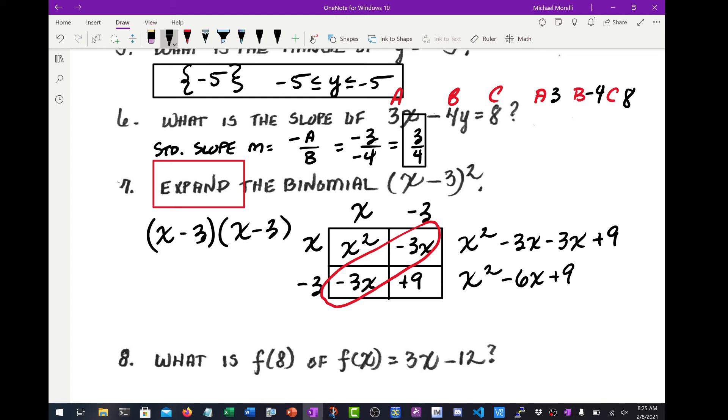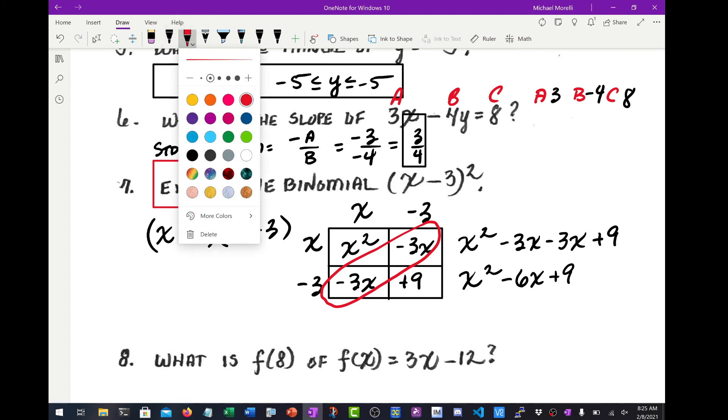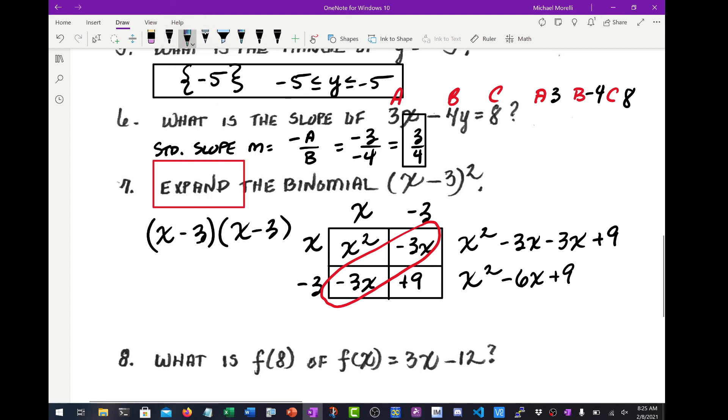The second way to do this, and this is the way that most people do it and maybe higher level education, is to do something called FOIL, which FOIL stands for first, outer, inner, last. F-O-I-L. So it's first times first, outer times outer, inner times inner, last times last. If you do it right, it makes kind of like a crescent moon shape.